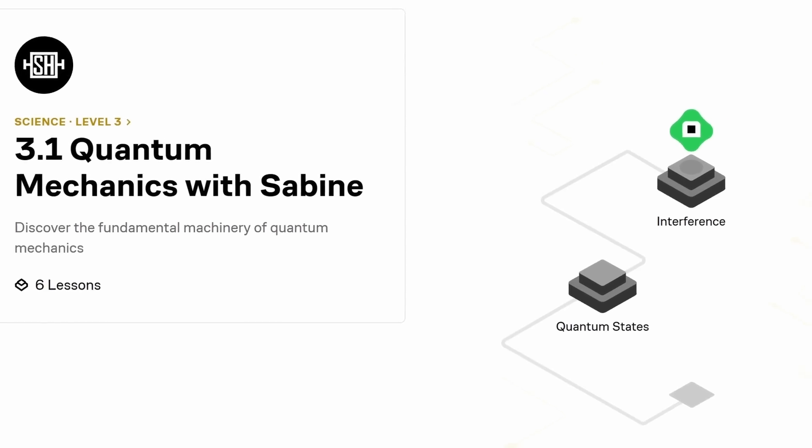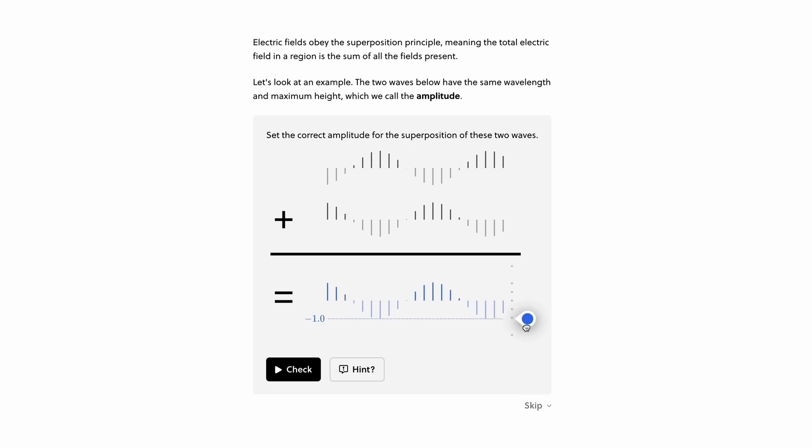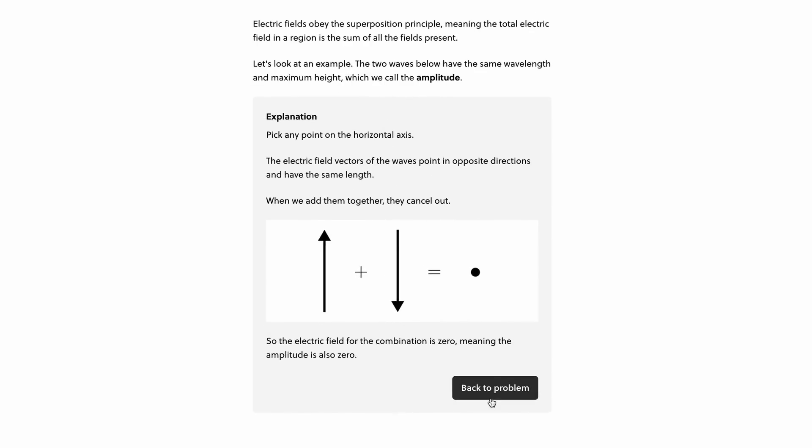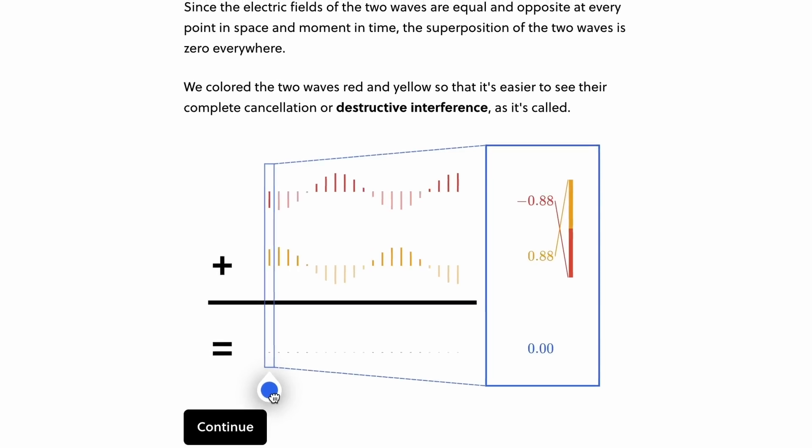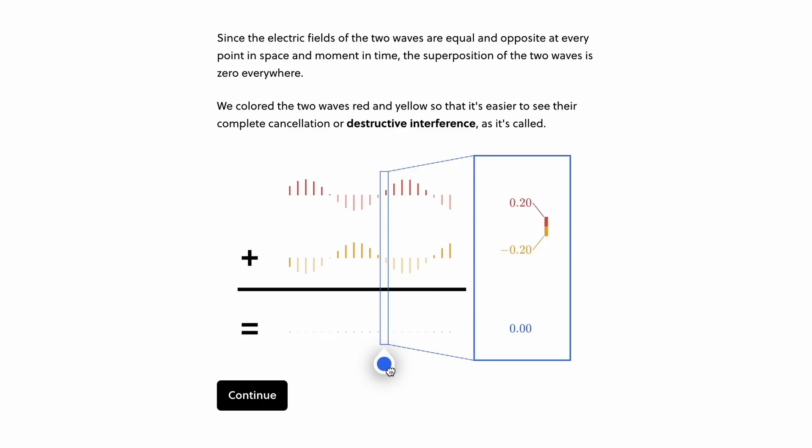I even have my own course on Brilliant. That's an introduction to quantum mechanics. It'll help you understand what a wave function is and what the difference is between superpositions and entanglement. It also covers interference, the uncertainty principle, and Bell's theorem.